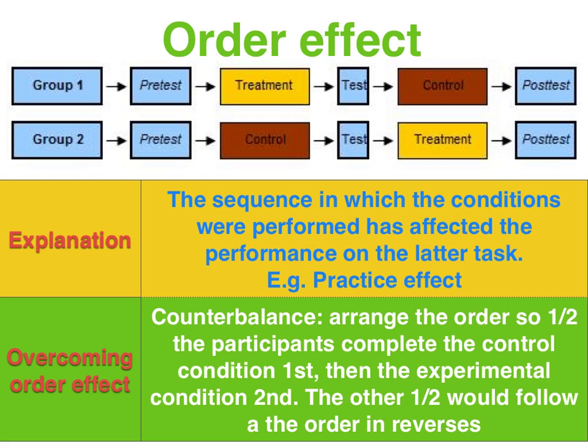So how do we overcome that? We counterbalance. We get half the subjects to do the control condition first and the other half to do the experimental condition first, and then we swap. So that if there is a practice effect, half will go better on the control condition and the other half will go better on the experimental condition, therefore the improvement will be cancelled out.